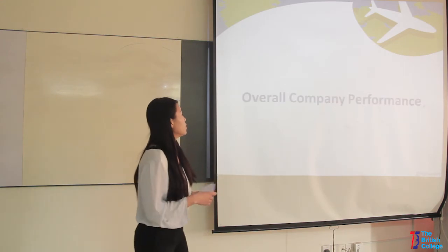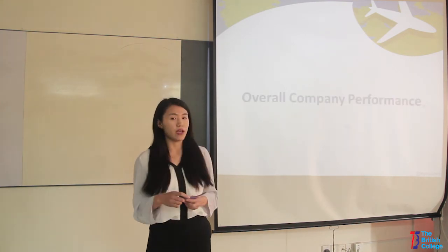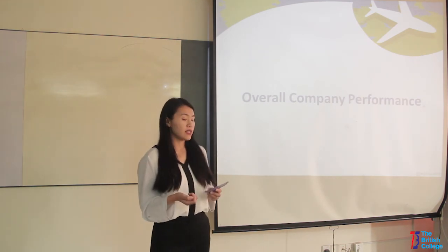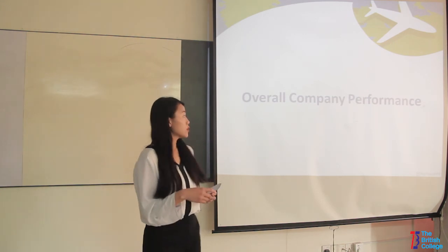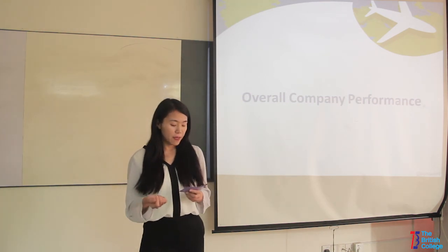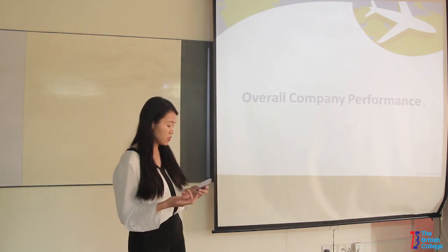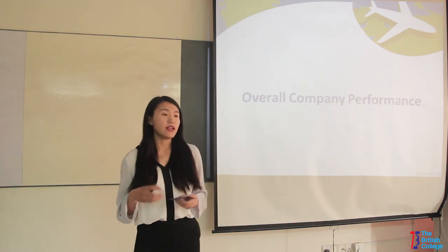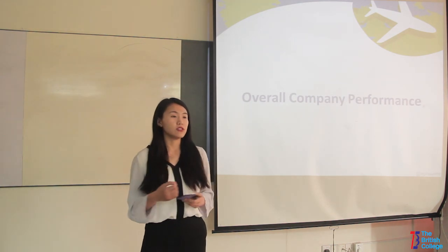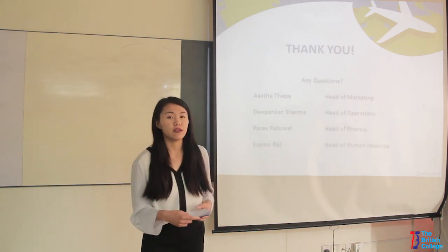Lastly, to recap our company performance from the operating statistics, we can see that we have better performance than the industry averages. However, debt to equity is below average because we financed our acquisitions by selling stock and increased our debt. To conclude, our company was in loss from quarter two to quarter five. However, we switched to a normal airliner, reached our break-even point in the fifth quarter, and accepted the dual designate offer in the same quarter. Both of these helped us to increase our net profit significantly from the sixth quarter. We had a slow start due to some bad decisions, but we pulled through in the end. With this, we have come to the end of our presentation. Thank you very much.